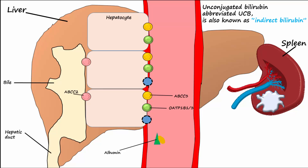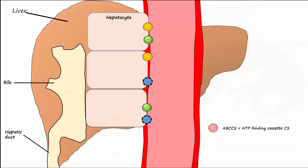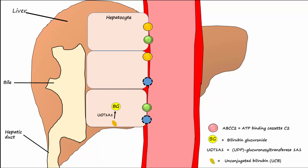UCB enters the hepatocytes by way of passive diffusion or incompletely defined transporters. Once inside the hepatocyte, the unconjugated bilirubin has two glucuronic acid moieties added to it. This is done by the enzymes known as UDP glucuronosyltransferases, and this process makes the bilirubin much more water-soluble.